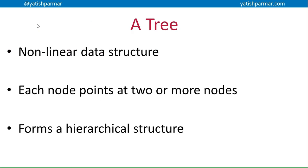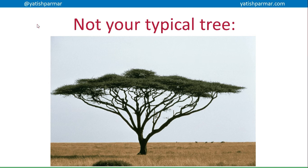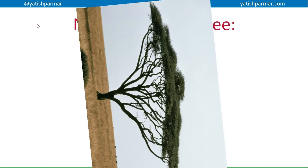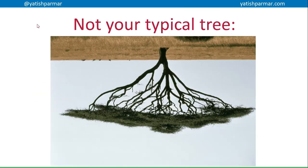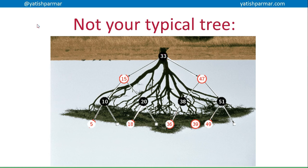A tree basically is a non-linear data structure. Queues, arrays, stacks, linked lists — the things you've looked at so far are all linear. In a tree, each node points at two or more nodes, and this helps to form a hierarchical structure — basically like this, where each node has a left and a right pointer that points at further nodes, creating a hierarchy of data.